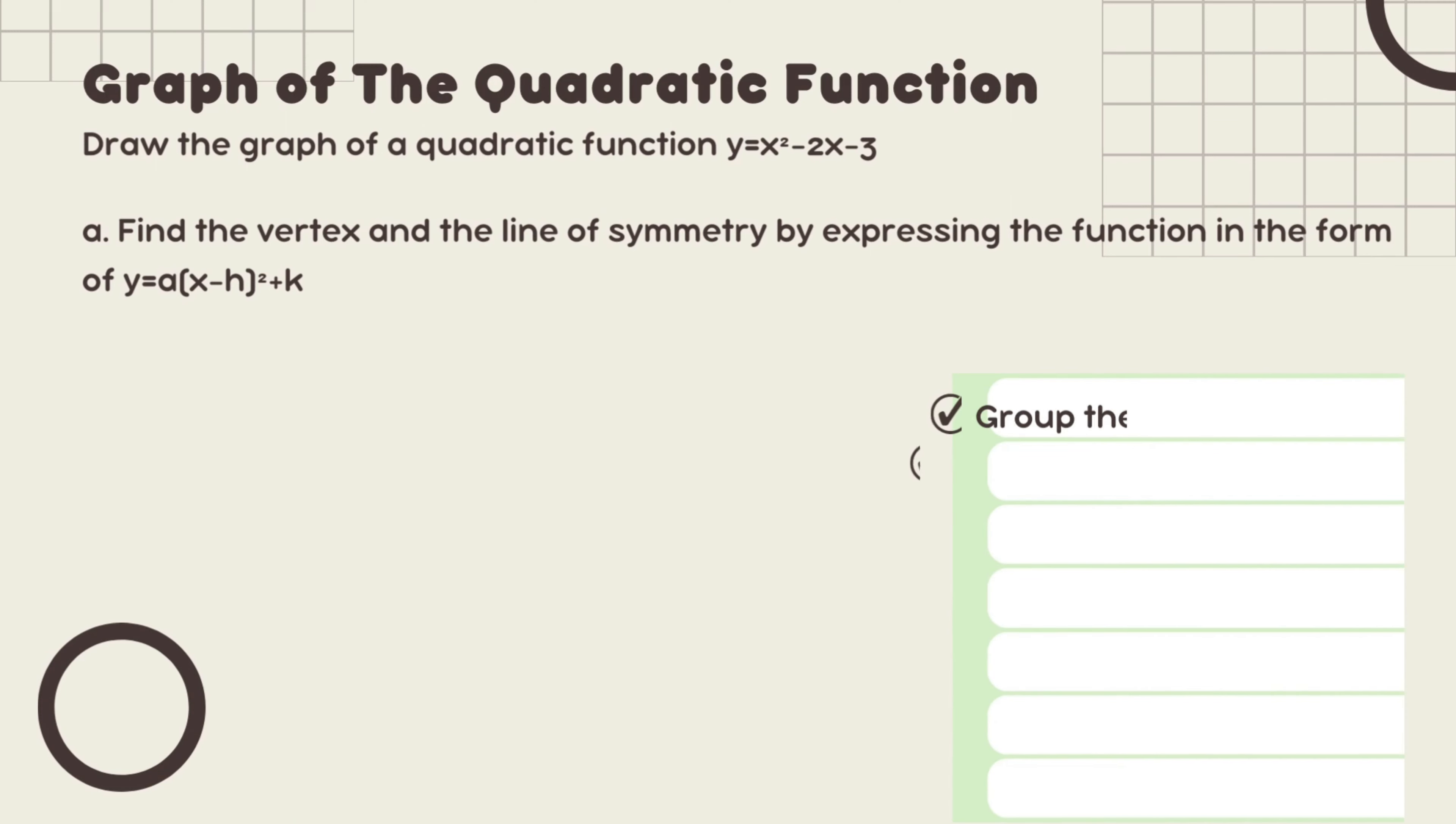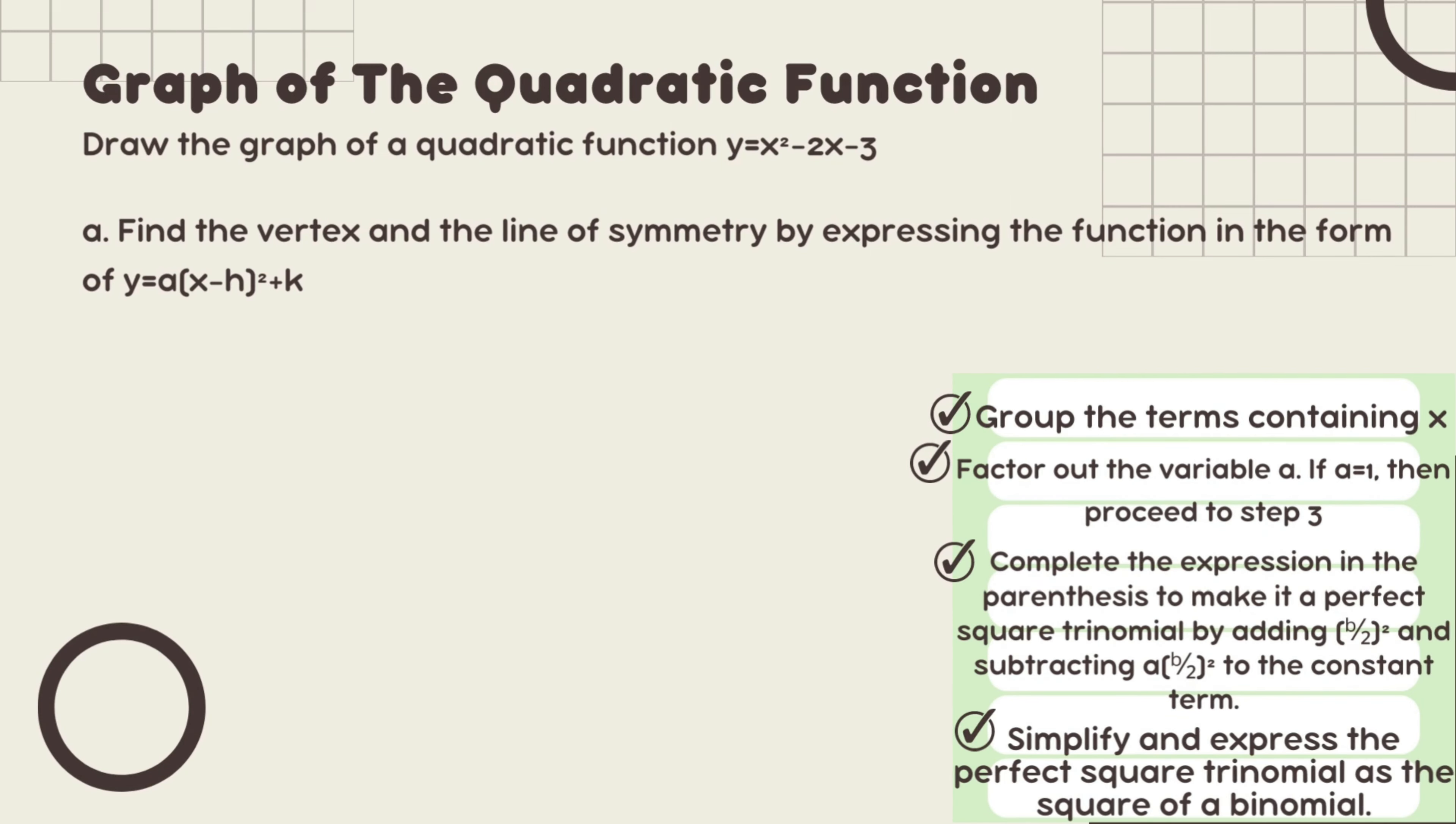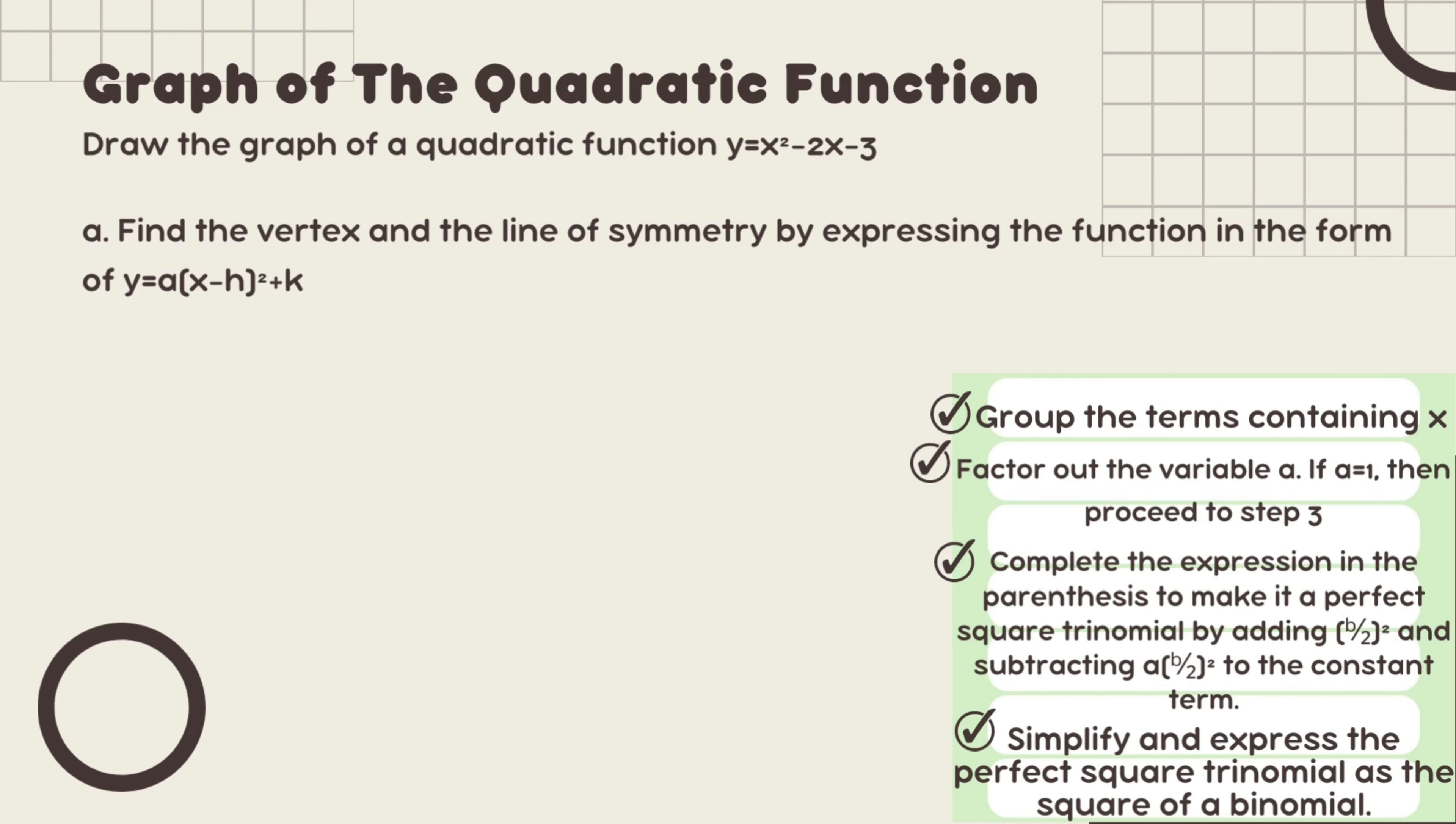Before finding the vertex and the line of symmetry of y equals x squared minus 2x minus 3, we have to follow these steps. First is to group the terms containing x. Then step 2 is to factor out the variable a. If a equals 1, then proceed to step 3.